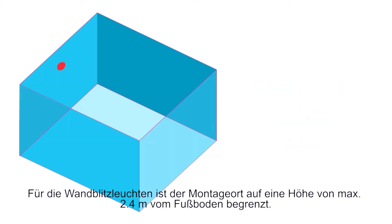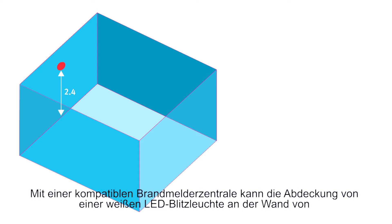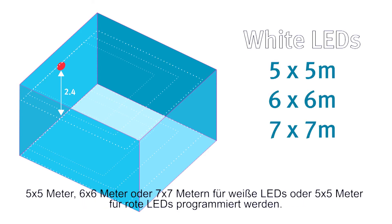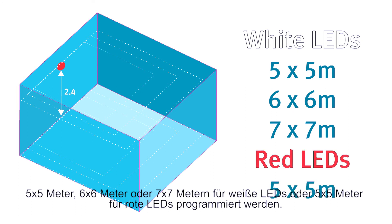For the wall beacons, the coverage volumes are based on a maximum height of 2.4 metres from floor level. Again, subject to your control panel, you can set the coverage to 5x5, 6x6 or 7x7 metres for white LEDs, and 5x5 metres for red LEDs.